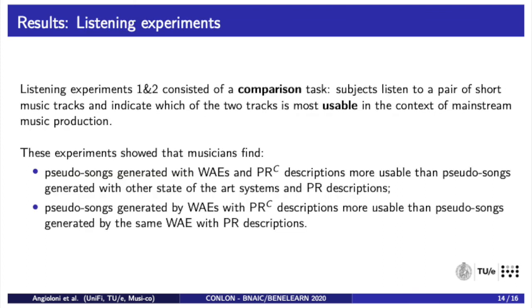We conducted three listening experiments with a total of 69 professional musicians. In the first two experiments, the subjects performed a comparison task in which they listened to a pair of short music tracks and indicated which of the two tracks is most usable in the context of mainstream music production. These experiments showed that musicians find pseudo songs generated with Wasserstein autoencoders and PRC descriptions more usable than pseudo songs generated with other state-of-the-art systems and PR descriptions, and that they find pseudo songs generated by Wasserstein autoencoders with PRC descriptions more usable than pseudo songs generated by the same Wasserstein autoencoder with PR descriptions.